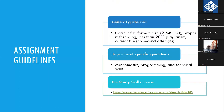Please always remember to submit the correct file, and the file should also be in the correct format. If the assignment instruction says it should be a PDF file, submit a PDF file; if it says Word, submit a Word file. Assignment size should be less than two megabytes, as this is the maximum limit allowed on our server. Make sure you don't have too many images, as that can easily exceed two megabytes. If there are lots of images, try to reduce their size before copying them into the Word file.